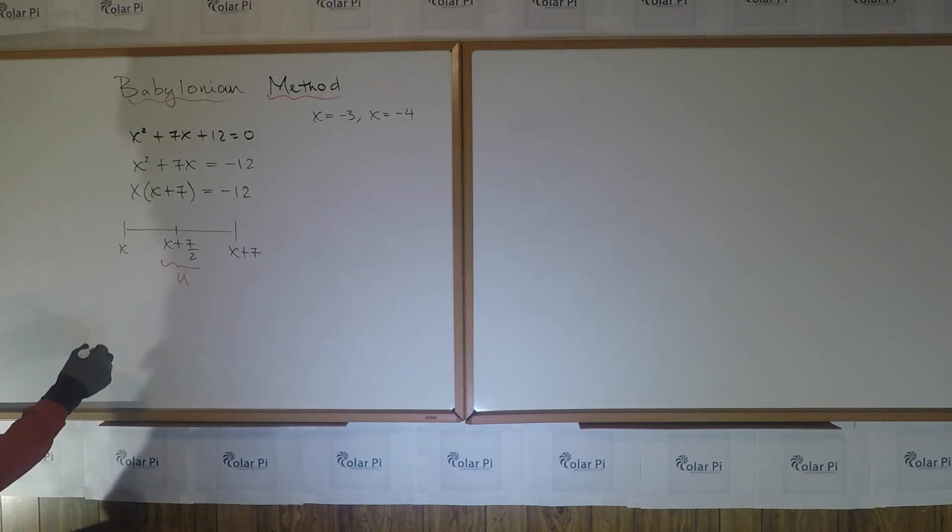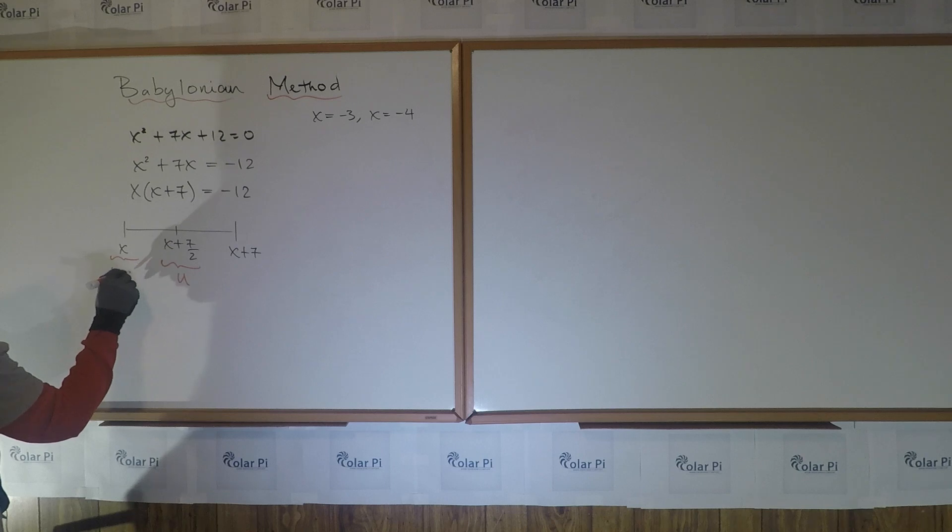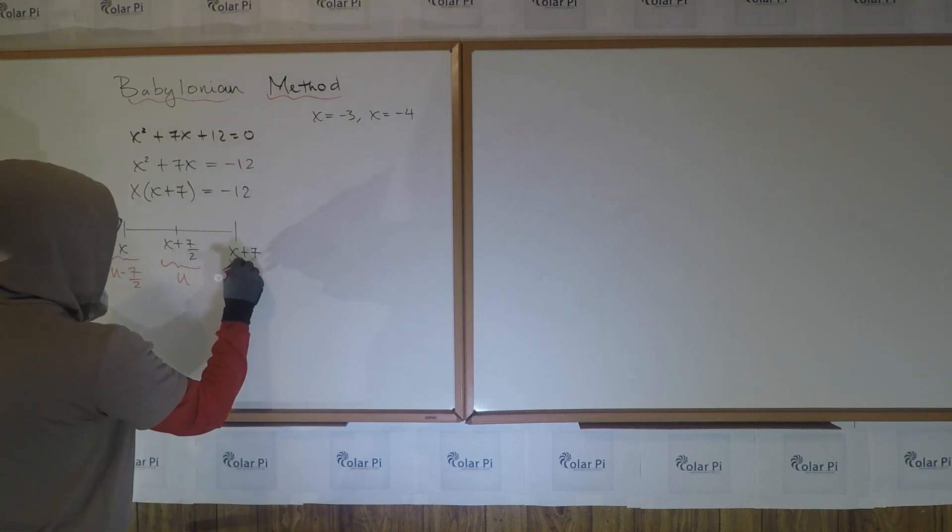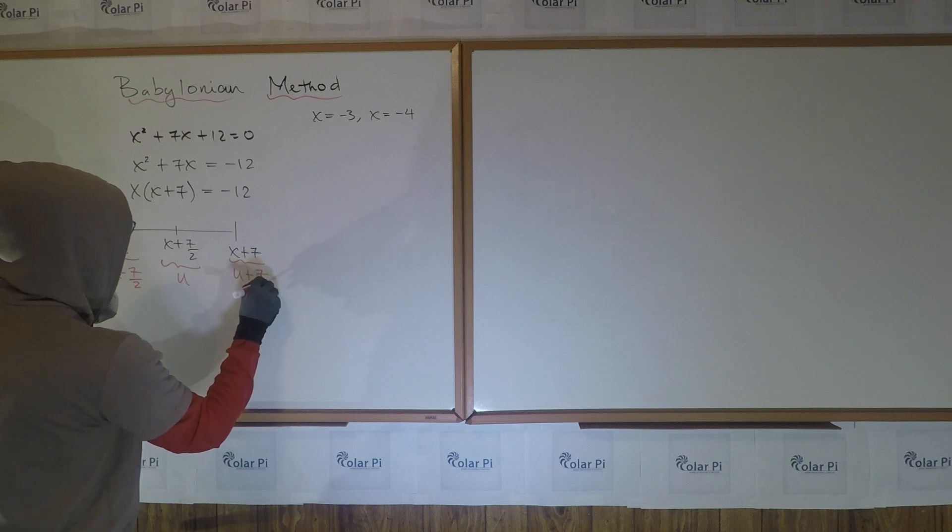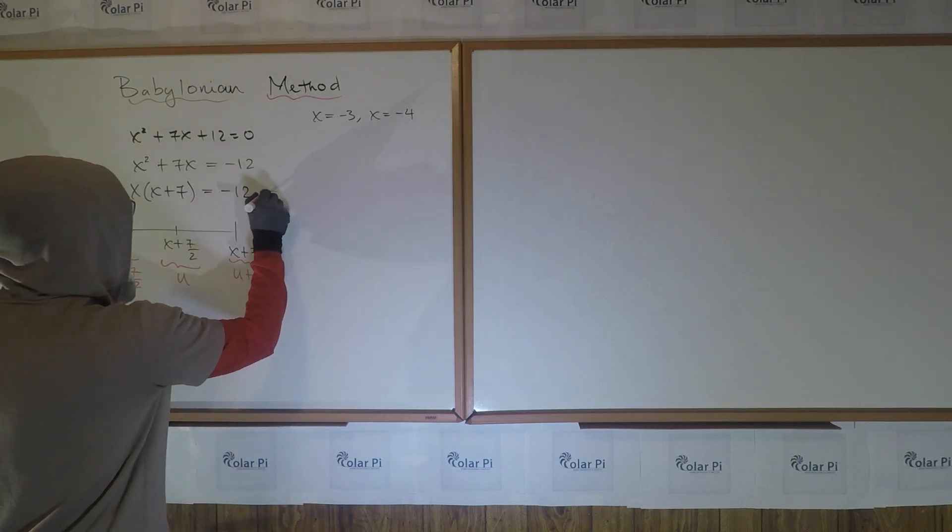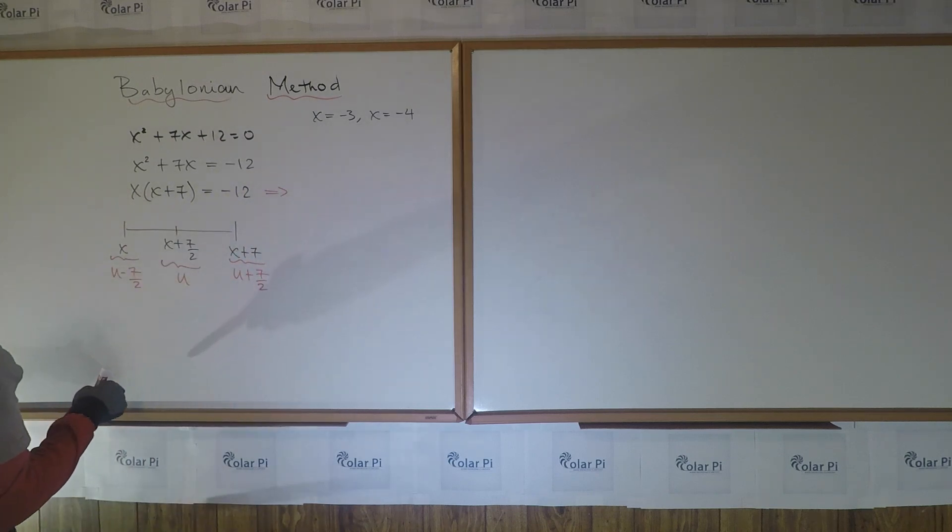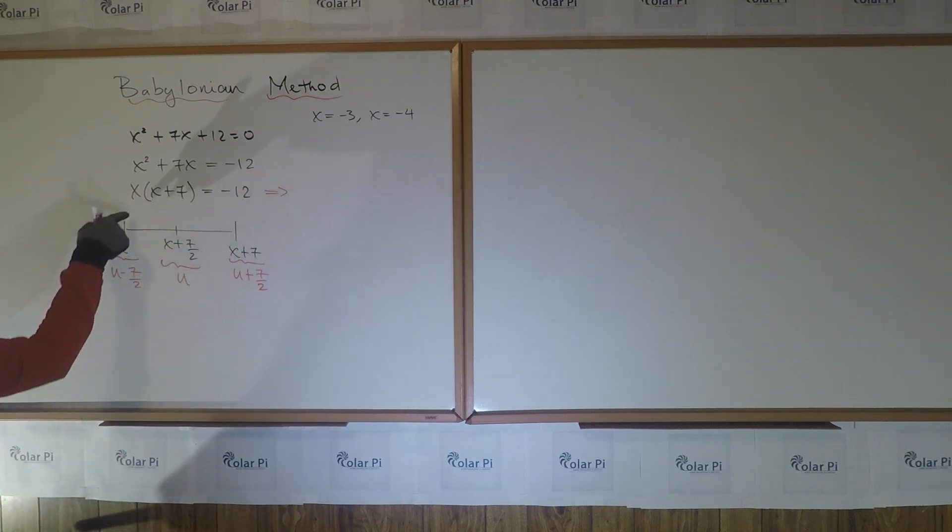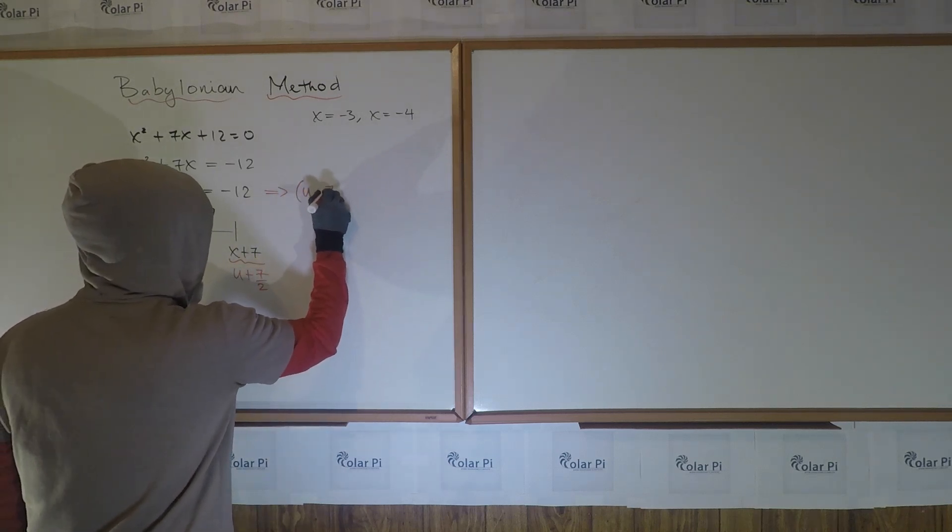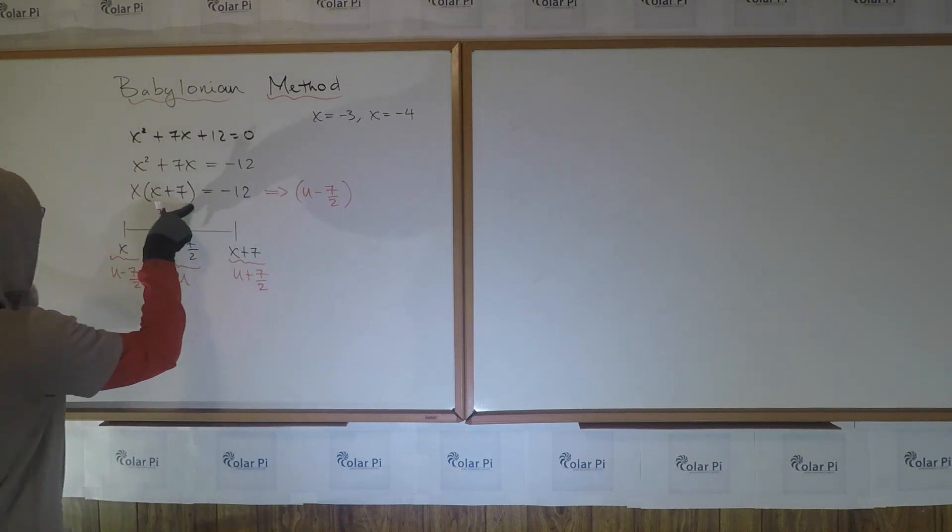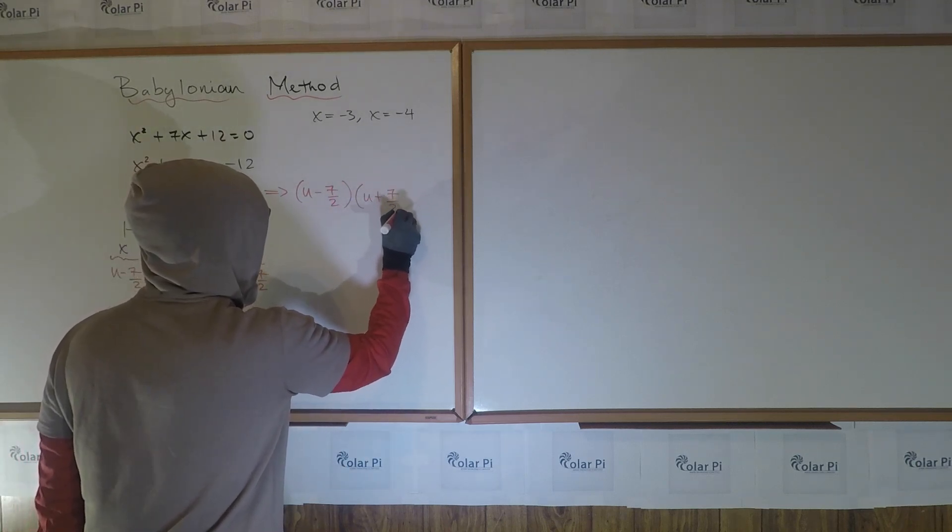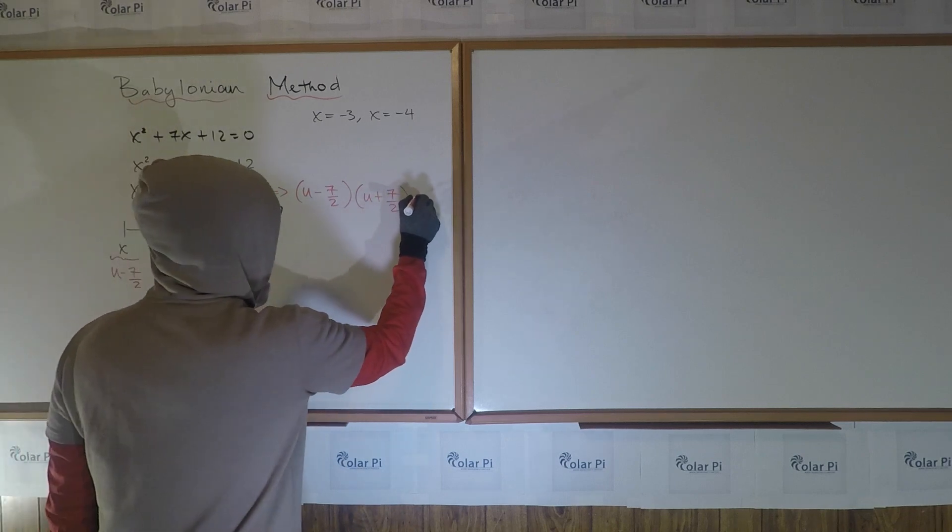Okay, cool. So then that means x is u - 7/2, and x + 7 is u + 7/2. And then we come back here and rewrite this step with the new names. Specifically, x is u - 7/2, times x + 7 is u + 7/2. Equals -12.